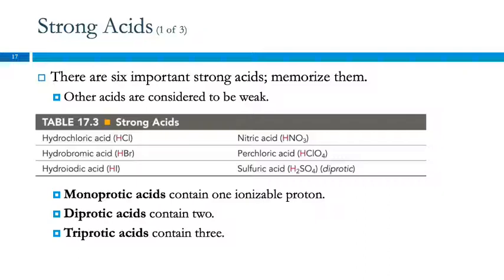For the diprotic and triprotic, don't they only lose one at a time? They do lose one at a time. And so sulfuric acid is listed here as a strong acid, but it's only with the dissociation of the first proton, the ionization. So when it loses one proton, that's strong, but then after that, it's weak.